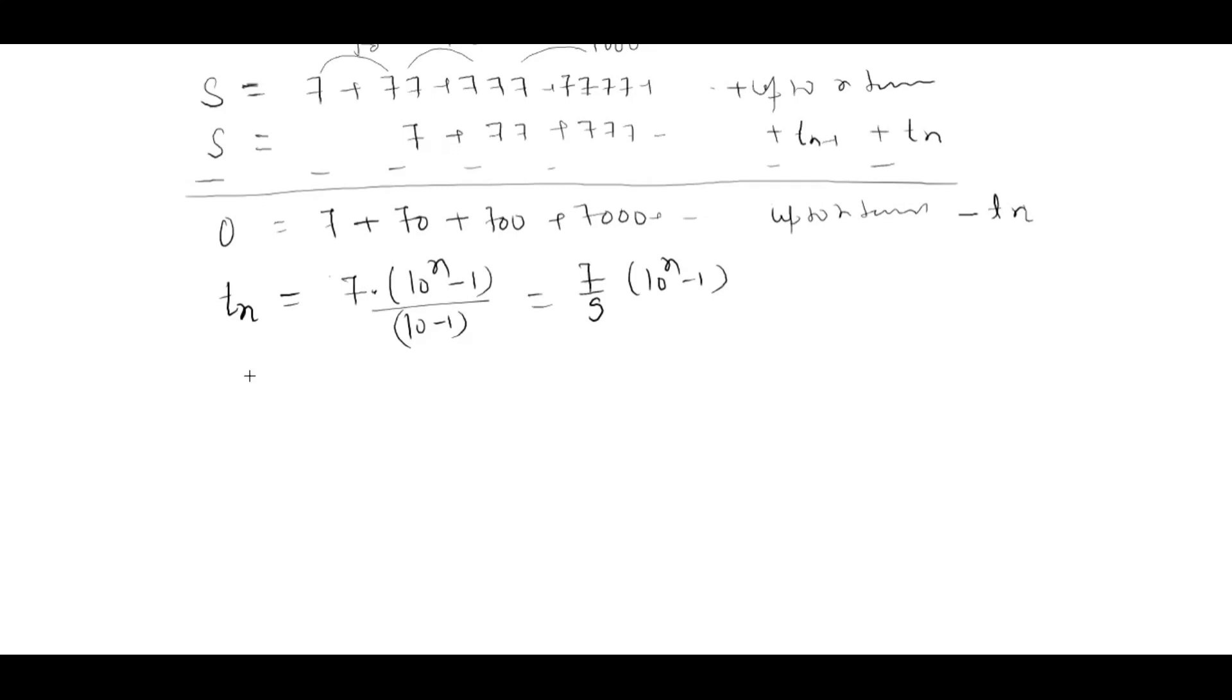My summation is t_1 plus t_2 plus t_n. Let's first find out whether my t_1 is correct. If I put n equals 1, this becomes 7 by 9 times 10 to the power 0, which is 7 by 9 times 9, which gives 7. So 7 is correct, this is t_1.